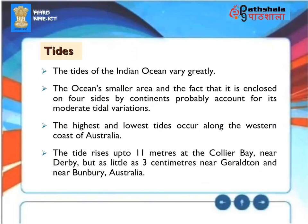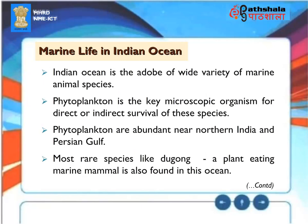Tides. The tides of the Indian Ocean vary greatly. The ocean's smaller area and the fact that it is enclosed on four sides by continents probably account for its moderate tidal variations. The highest and lowest tides occur along the western coast of Australia. The tide rises up to 11 meters at the Collier Bay near Darby, but as little as three centimeters near Geraldton and near Bunbury, Australia.